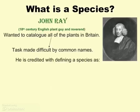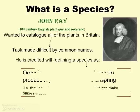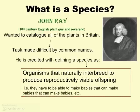So he is credited with coming up with this definition here, which is a working definition — red box, so this is important information. The definition of species that we use now is that organisms can naturally interbreed to produce reproductive viable offspring, which just means that they can sustain a population where their offspring can interbreed and make babies.